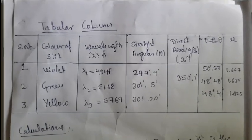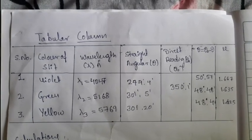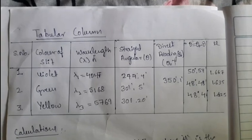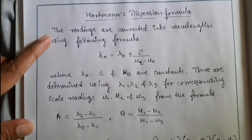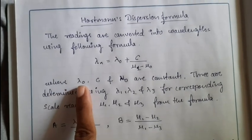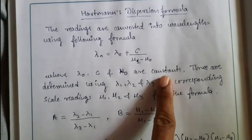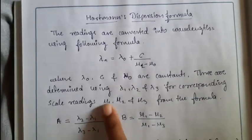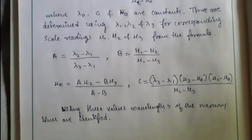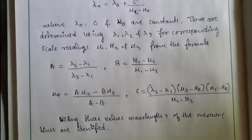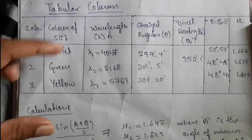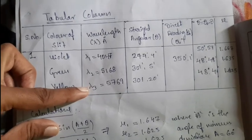Here are the readings for the three colors from the spectral line of mercury. Using these values, we have to calculate the Horstman dispersion formula constants. Here are the equations for the constants. In the tabular column, three colors are selected — violet, green, yellow. The corresponding standard wavelengths for these colors are lambda 1, lambda 2, lambda 3. Take the spectral angular reading from the spectrometer from any one window.